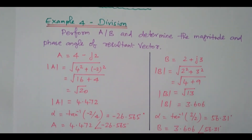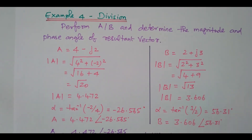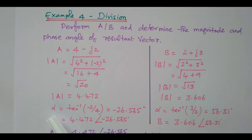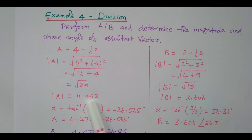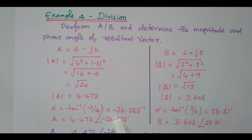Now we will go to the next example: division. The first vector A equal to 4 minus J2 will now be converted into polar form. The magnitude of A is square root of 4 squared plus minus 2 squared. So the value is 4.472 magnitude. Then the angle is tan inverse minus 2 by 4 — imaginary term divided by real term — giving minus 26.565 degrees.